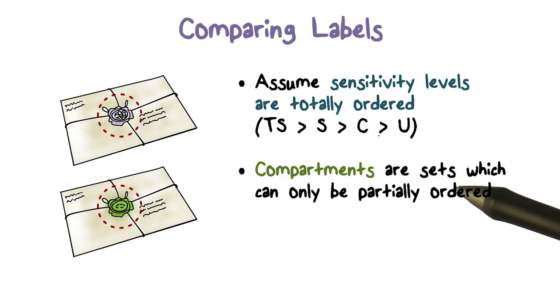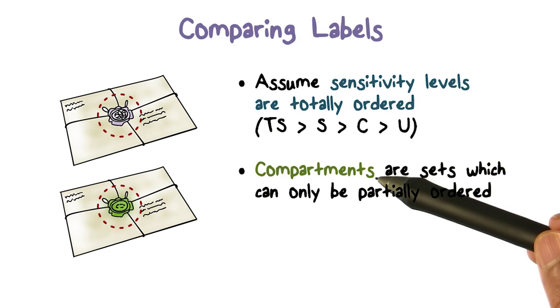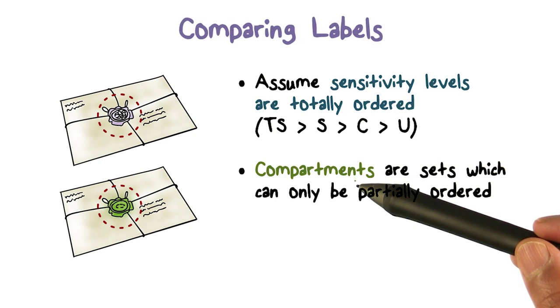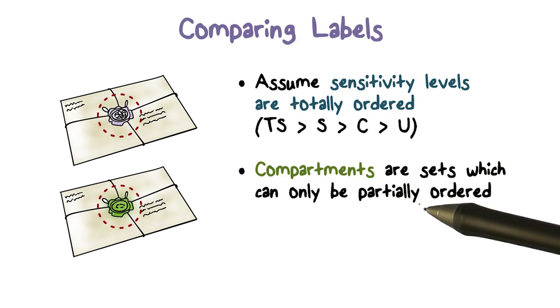Labels have a sensitivity level, but they also have a compartment. Compartments are sets of different topics or categories. How do you compare sets? Take a set S1 and S2. S1 may be contained in S2, S2 may be contained in S1, or neither set may be contained in the other. If set S1 has some elements that S2 doesn't, and vice versa, then neither set will be contained in the other.